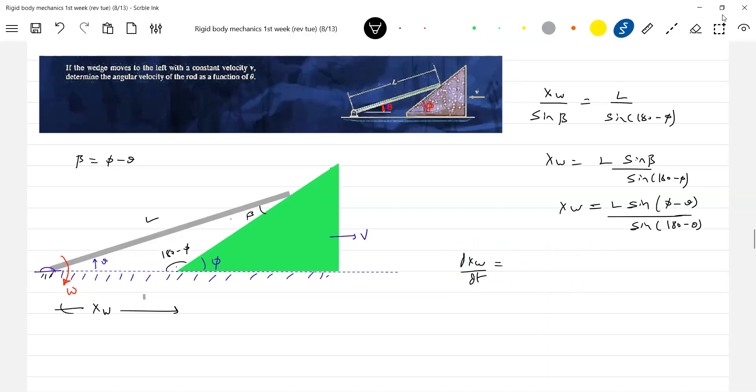I'm very sure that omega is minus d(theta)/dt and dx_w/dt plus v. Or according to the question, if it is towards left, then this will be negative, this will be positive.